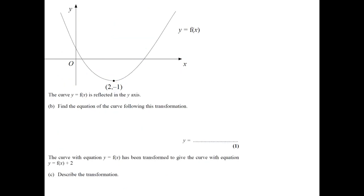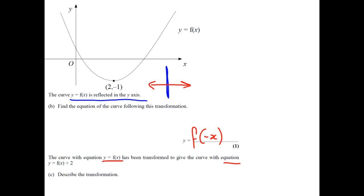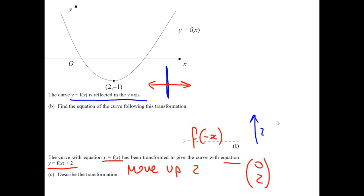Part B: now we're reflecting f(x). Find the equation of the curve following its transformation. If we reflect in the y-axis, we're actually reflecting horizontally, so we're doing it to x. So it's going to be f(−x) as the answer. Next, Part C: the curve y equals f(x) has been transformed to give f(x) + 2. It's outside, so it's to y, and you can say move up 2 — or a nice way to put it, move by the vector (0, 2), which means 0 across and 2 up.